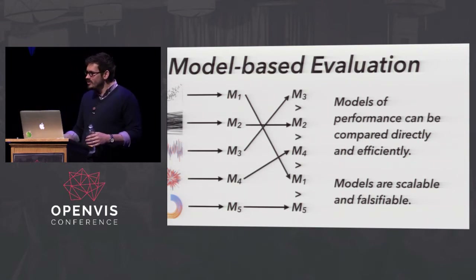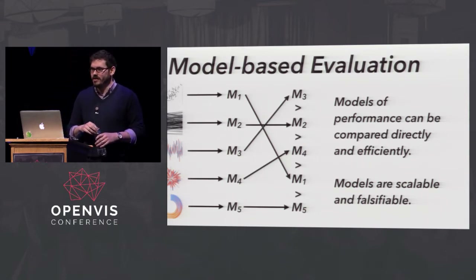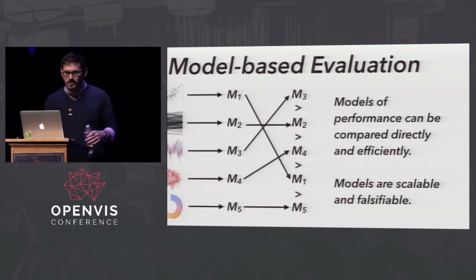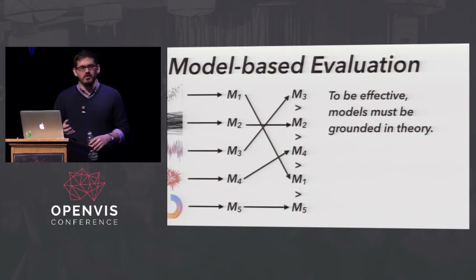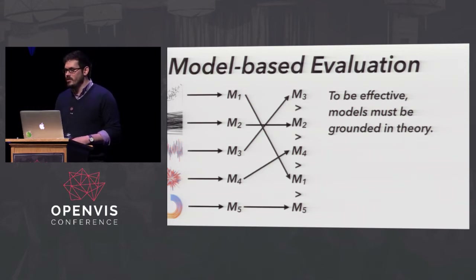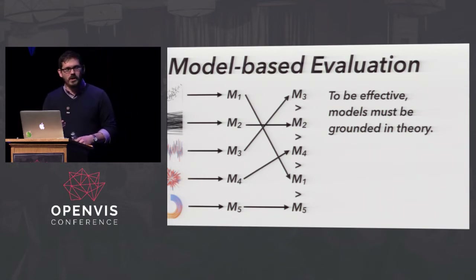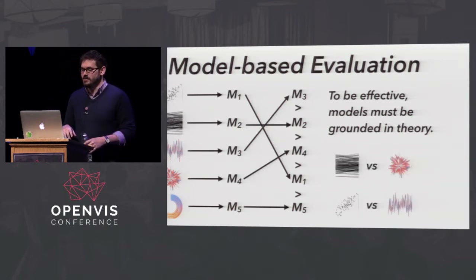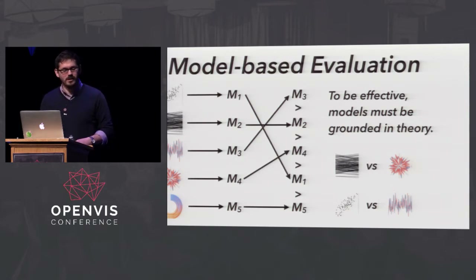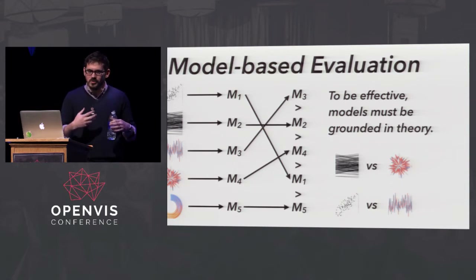Models are also scalable and falsifiable - if somebody comes along with a better model, you can just regenerate and start over. But to really be effective, a model has to be grounded in theory. You can build a model out of anything - overfitting and so forth - but for this problem we really want the model grounded in some sort of theory, so whenever we're comparing a parallel coordinates plot to a radial line chart or a scatter plot to a line chart, we have some notion as to why we see the effects. That connects it to how humans actually work.